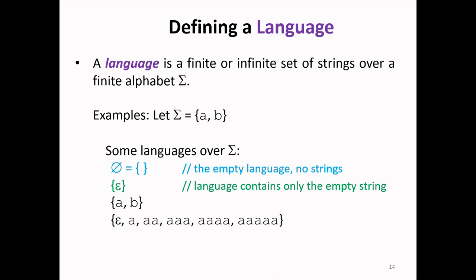Language consisting of two strings {a, b}. And the last language consists of strings including ε, a, aa, aaa, aaaa, aaaaa. That is, at most 5 a's in this particular language.